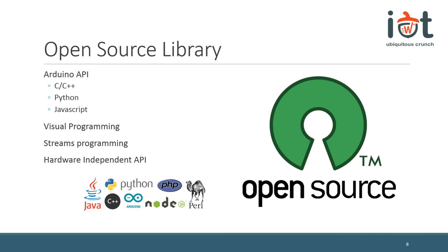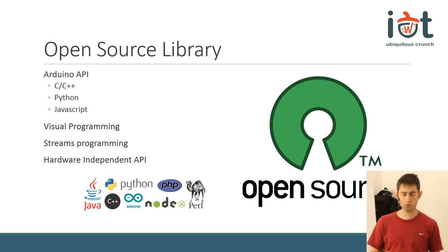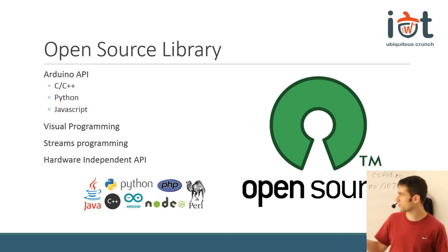Another important fact about Yludrin is that everything is open source, except the cloud system which you use to write your programs. All the libraries and all the clients that you use on the board are still open source. So if at some point you decide you don't want to use Yludrin anymore, your programs will still run on the boards. The only features you cannot use are the dashboard and communication features, but the rest functions perfectly.